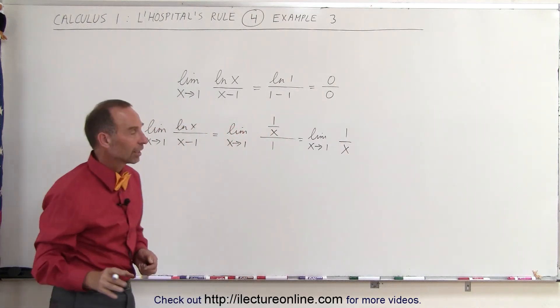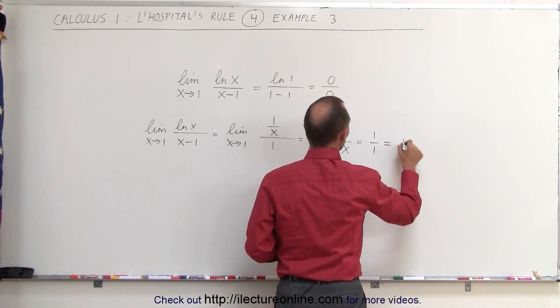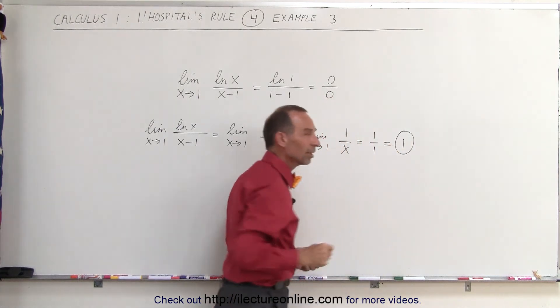Now we can go ahead and plug in the limit because when we plug in 1 for x this is equal to 1 divided by 1 which is equal to 1 and that is a legitimate limit.